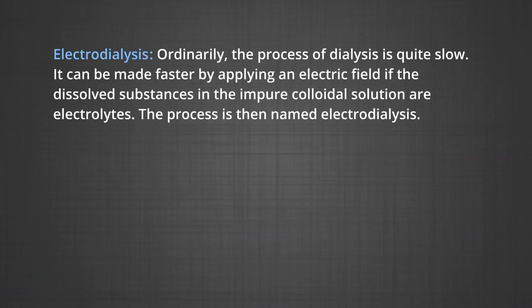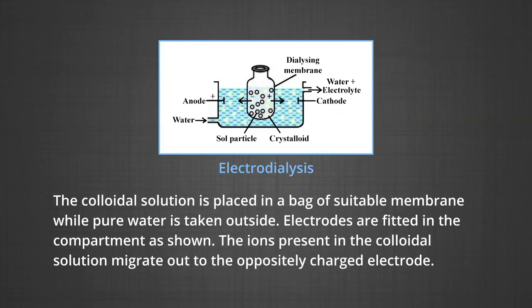Electrodialysis: ordinarily, the process of dialysis is quite slow. It can be made faster by applying an electric field if the dissolved substances in the impure colloidal solution are electrolytes. The process is then named electrodialysis. The colloidal solution is placed in a bag of suitable membrane while pure water is taken outside. Electrodes are fitted in the compartment as shown in the figure. The ions present in the colloidal solution migrate out to the oppositely charged electrodes.